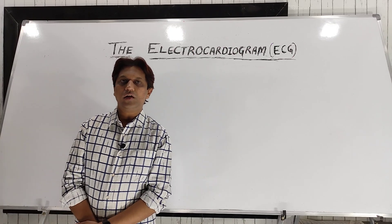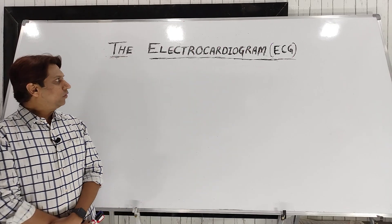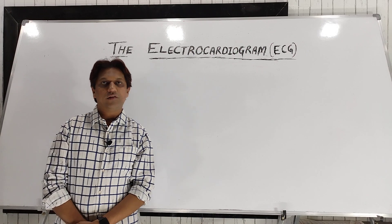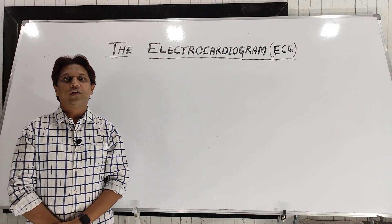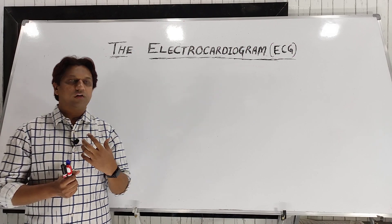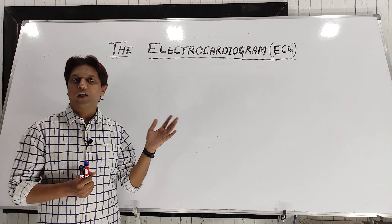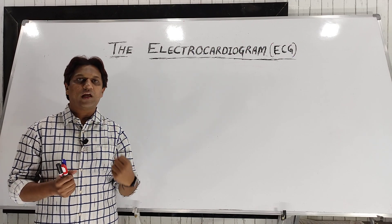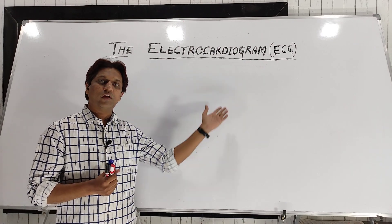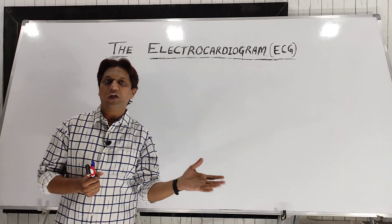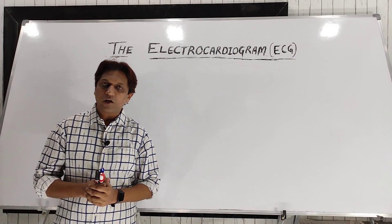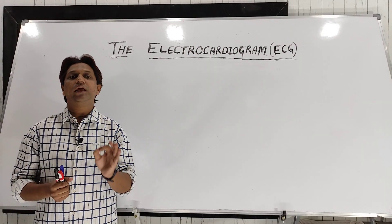Hello friends, welcome back to our YouTube channel Doctor's Corner. Today we are discussing the second part, that is Part 2, of the topic electrocardiogram or ECG. In Part 1, we discussed the electrophysiology of the heart — how electrical activity from the heart is recorded graphically on graph paper, how depolarization and repolarization are transmitted on an ECG paper, and how different waves like P wave, QRS complex, and T wave are formed.